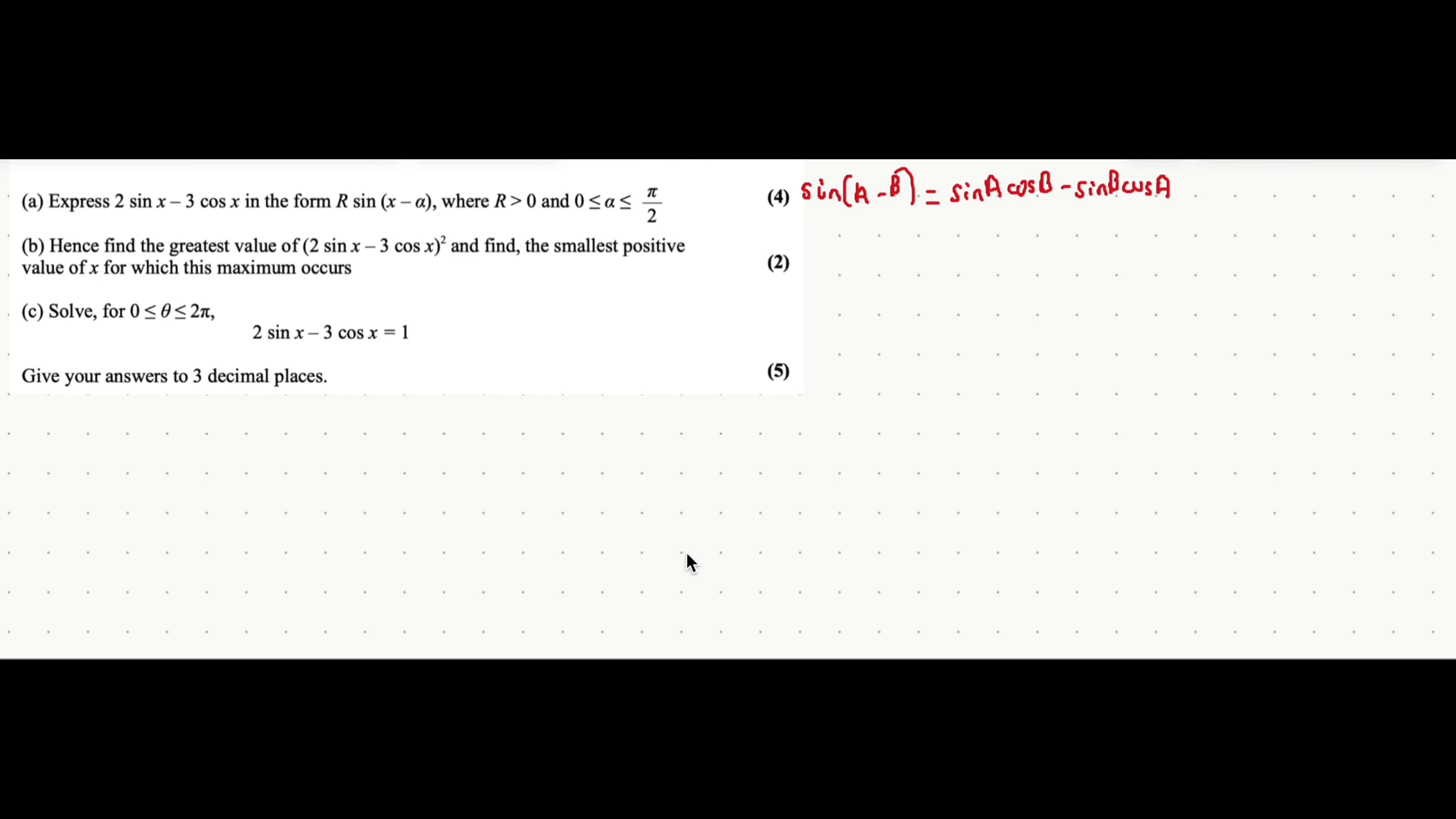So my past video was about R-Cos formulae and today we're going to have a look at an exam question about R-Sine formulae. So just to start with, I've written out the expression that you need to know for a double angle formula for sine. What we're going to do is we're going to replace A with X and B with alpha. We're going to write our R sine of X minus alpha.